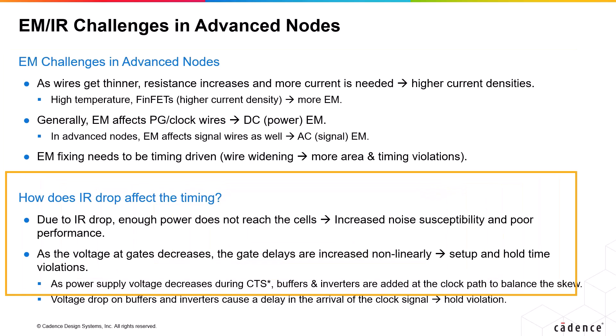Coming to the next issue — IR drop. IR drop is a signal integrity effect caused by the voltage drop due to resistance and the current drawn from the power and ground grids. The name is derived from Ohm's law, which defines voltage as the product of current and resistance on a net. An unacceptable voltage drop due to higher than predicted resistance and current passing through a particular metal layer is generally defined as IR drop.